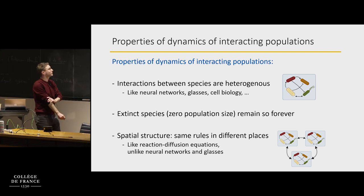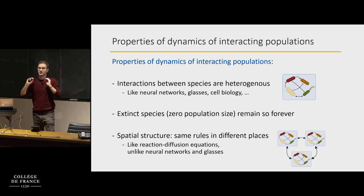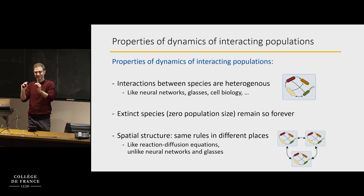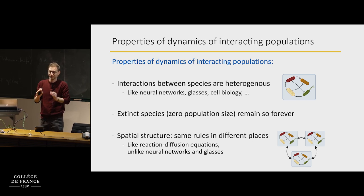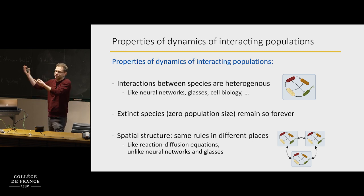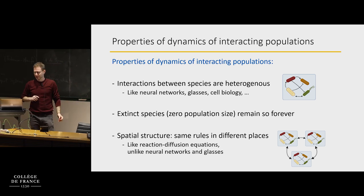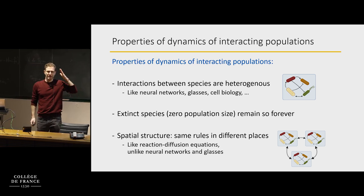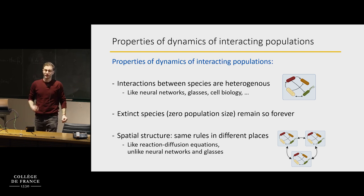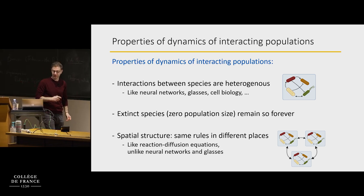Another thing is this idea that there's a special value of the variables, which is population zero. When a population of some species is zero, it remains there forever — unless of course it comes from outside in space and can migrate inside. In terms of dynamical systems, this is an absorbing value for this population, and that will be very important in what follows.